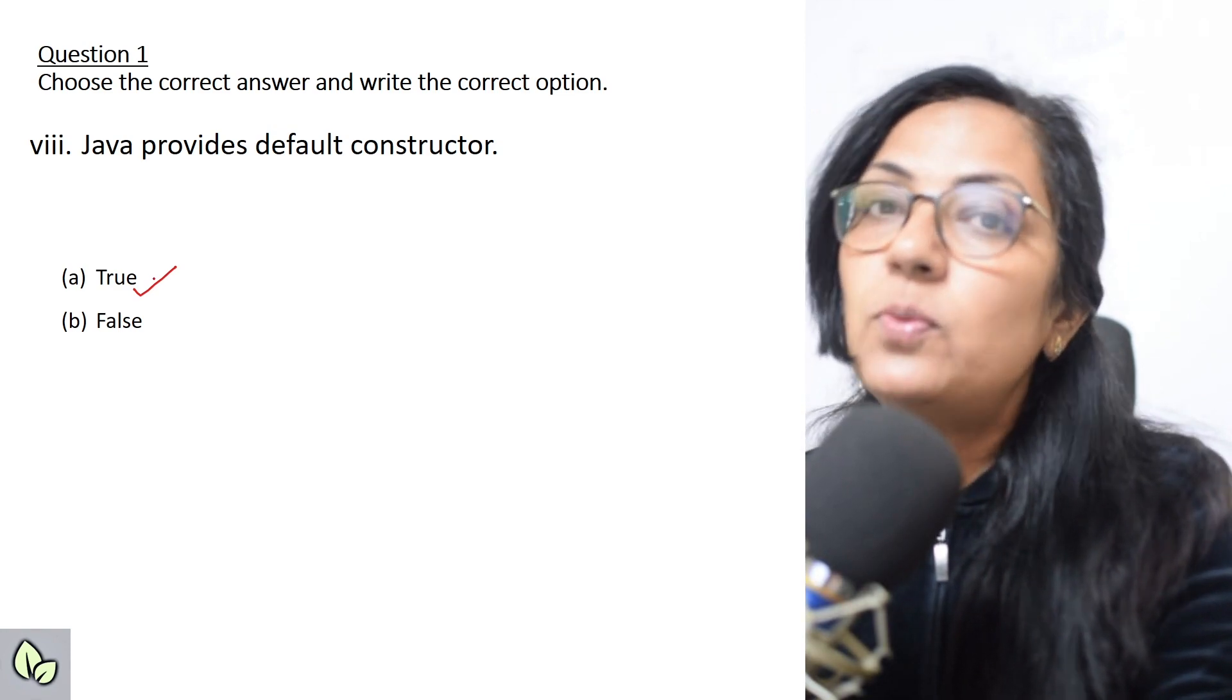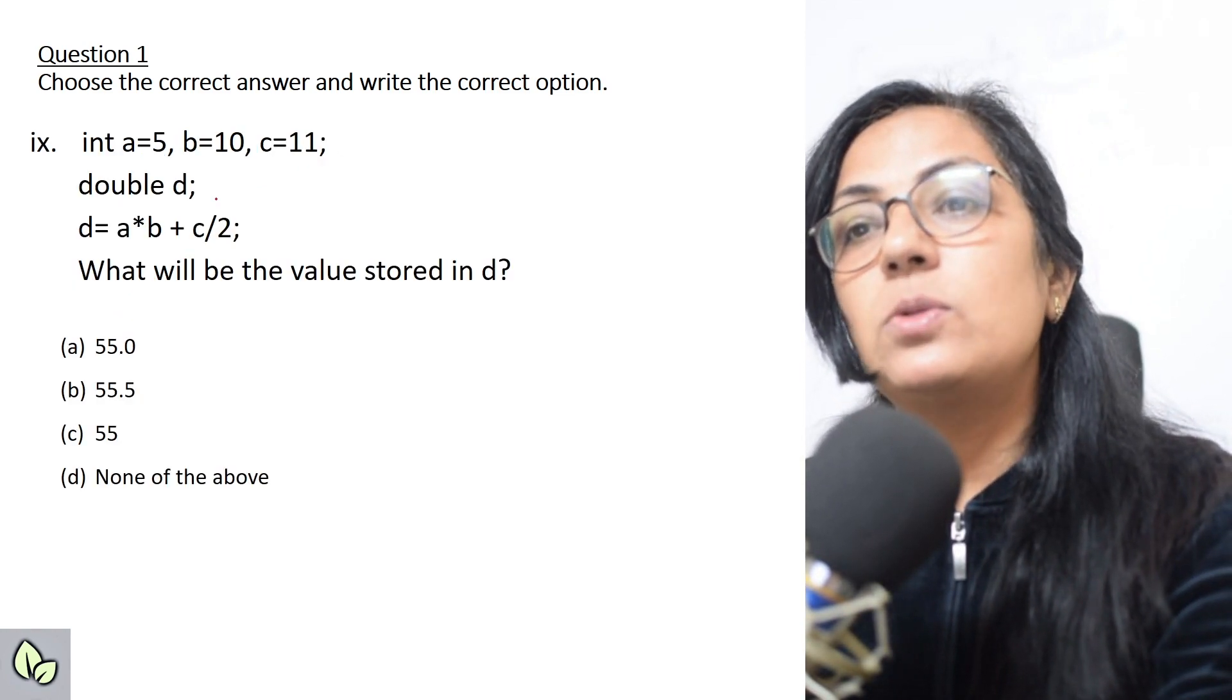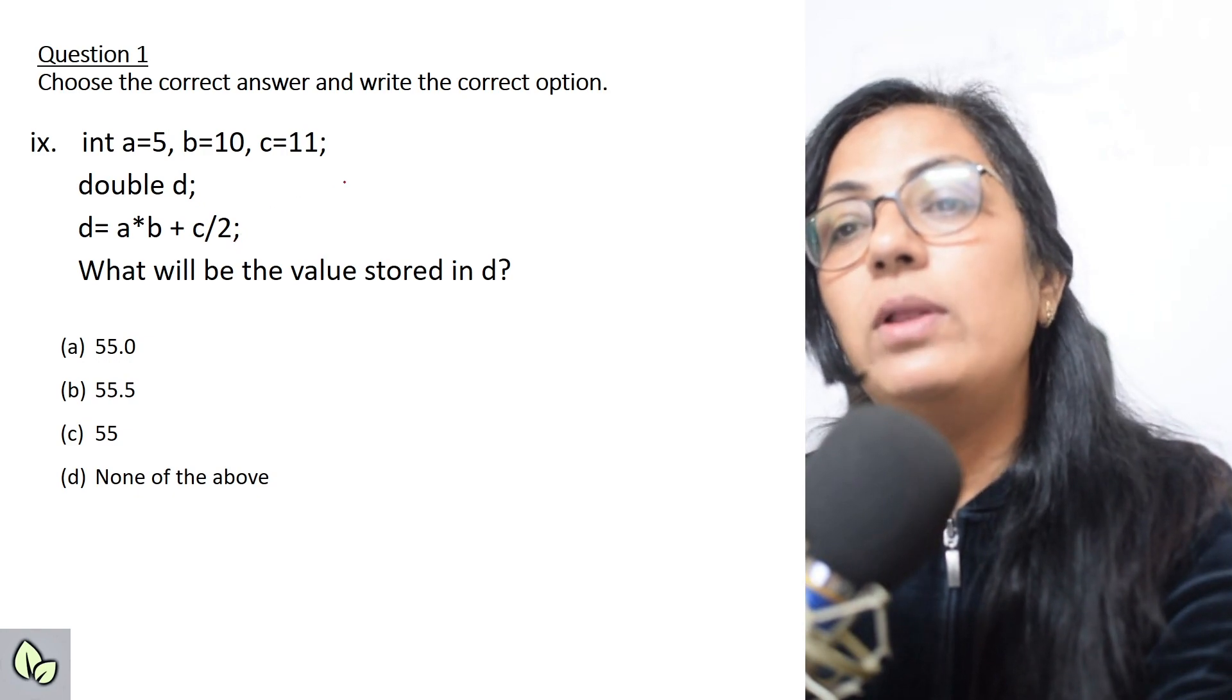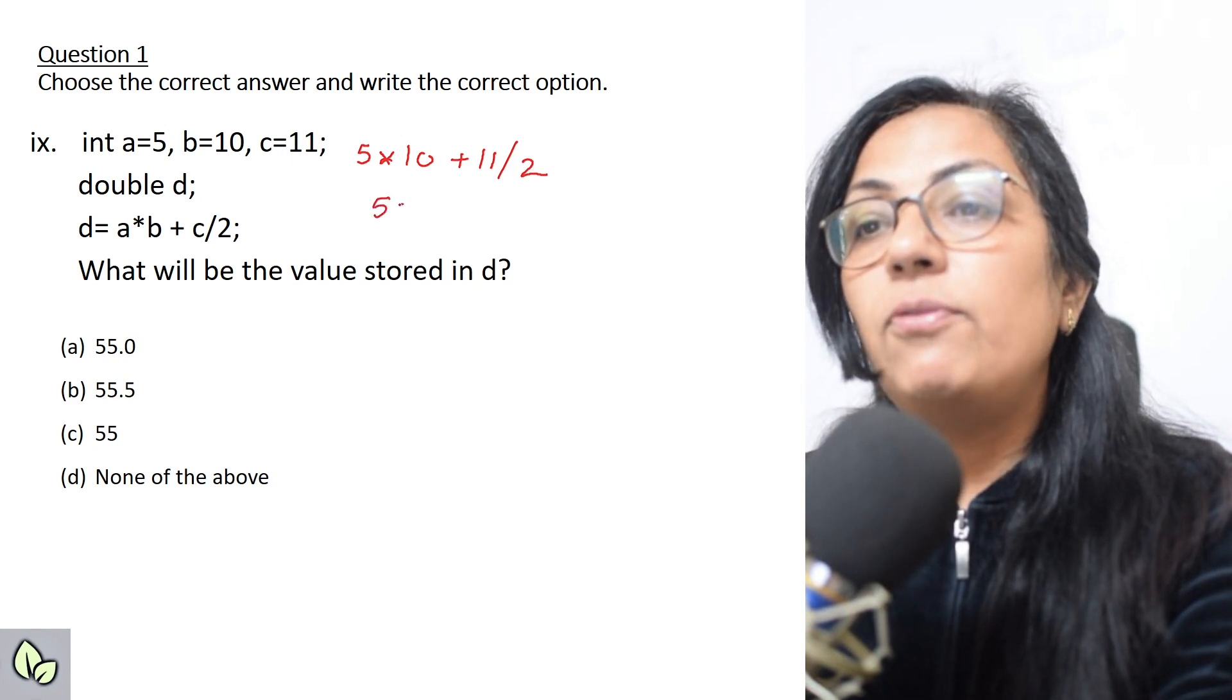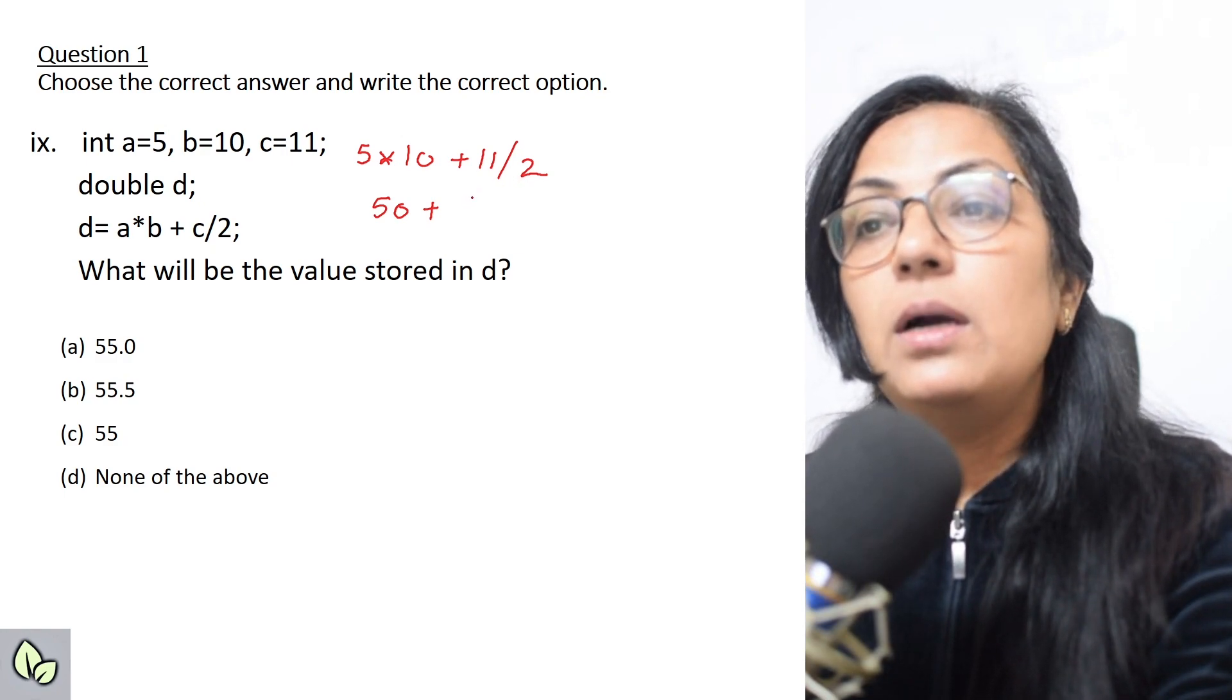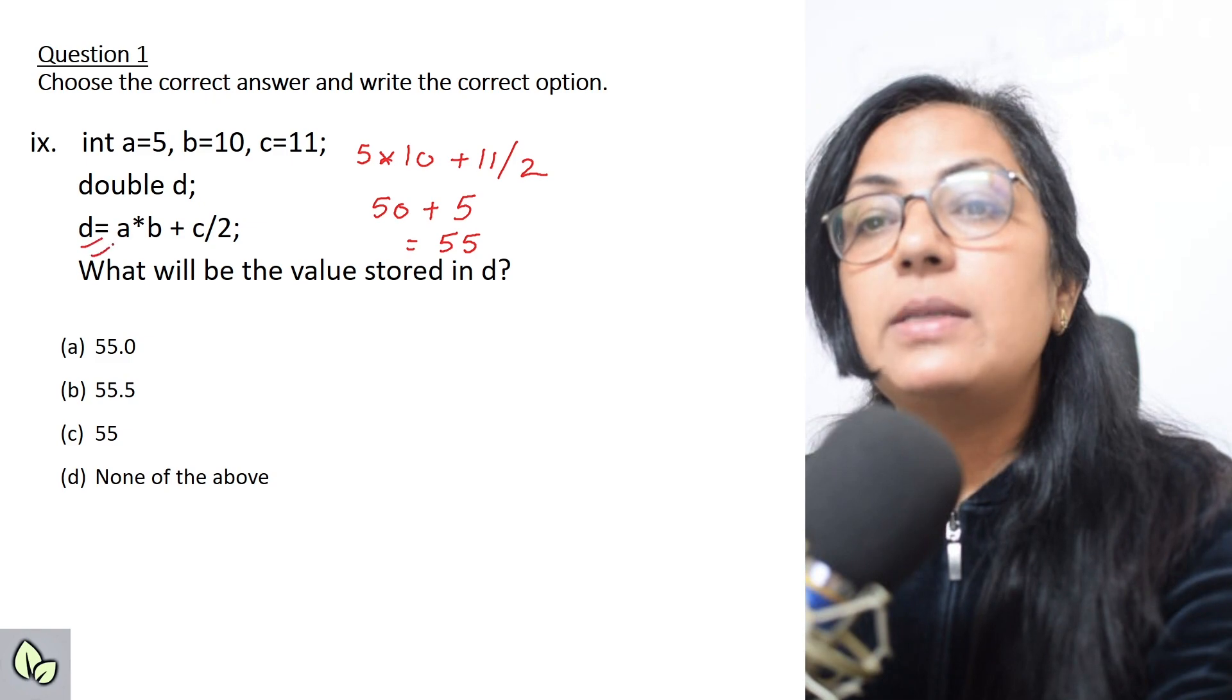Next question: int a equals to five, b equals to ten, c equals to eleven, double d. d equals to a into b plus c slash two. What value will be stored in d? a into b, that is five multiplied by ten, plus c, eleven slash two. So this is fifty plus eleven slash two. Both are int type, so here slash sign gives you the quotient, so answer will be 55, and since d is double type, the answer will be 55.0.